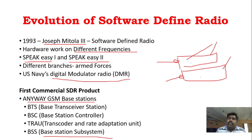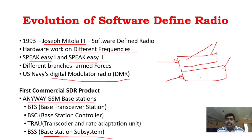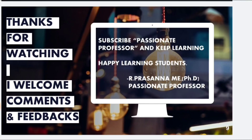This is a very important topic — the Evolution of Software Defined Radio and Cognitive Radio. To summarize the SDR evolution: first, Joseph Mitola proposed SDR; the first emerged devices were SpeakEasy 1 and SpeakEasy 2, used by armed forces; then the advanced version, Digital Modulator Radio; and finally, the first commercial SDR product — the Anyway GSM Base Station.